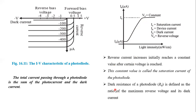Here we can note another term: dark resistance. When dark current flows, we define a resistance called dark resistance. By Ohm's law, it is voltage divided by current — specifically, the maximum reverse voltage divided by the dark current. This ratio of maximum reverse voltage to dark current gives us the dark resistance.